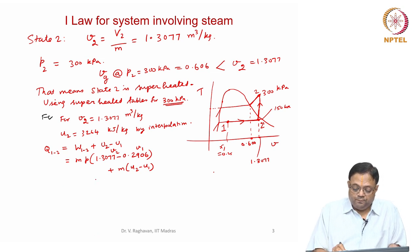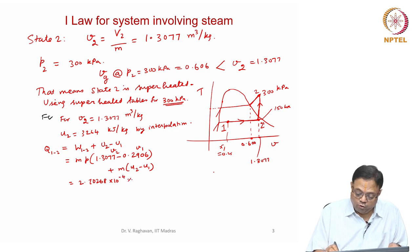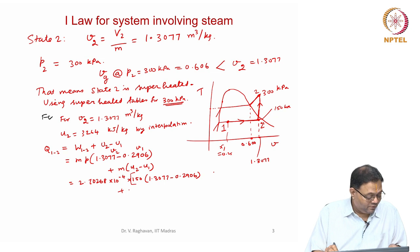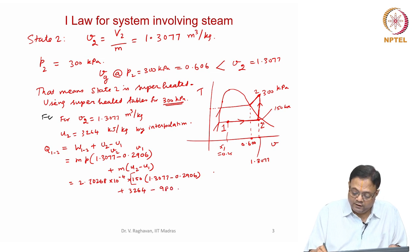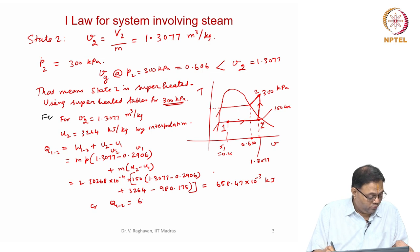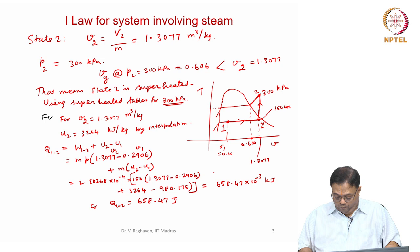Using Q₁₂ = m × [P × (v2 − v1) + (u2 − u1)]: = 2.70268 × 10⁻⁴ × [150 × (1.3077 − 0.2906) + (3264 − 980.175)]. This gives Q₁₂ = 658.47 × 10⁻³ kJ, or Q₁₂ = 658.47 joules.